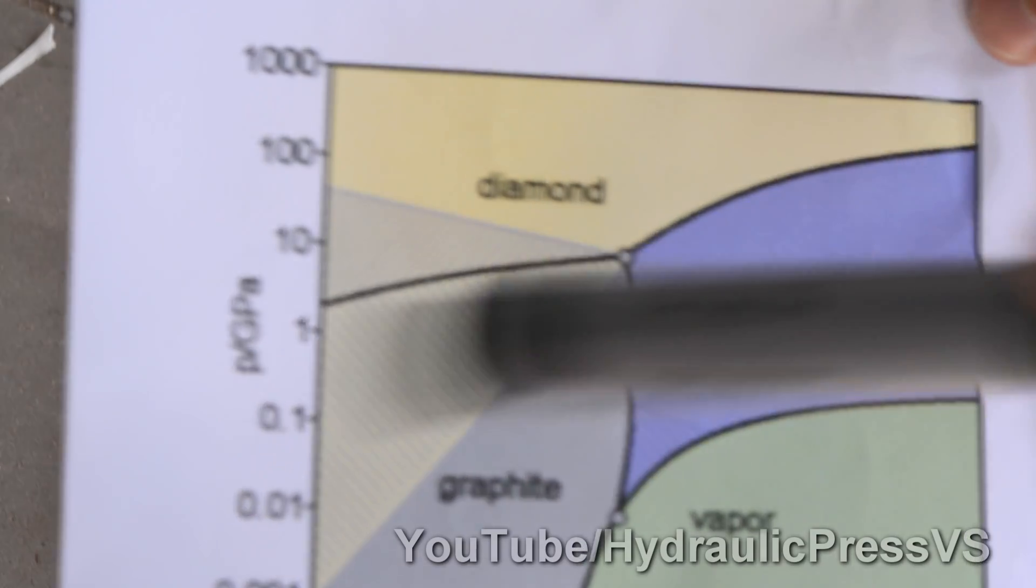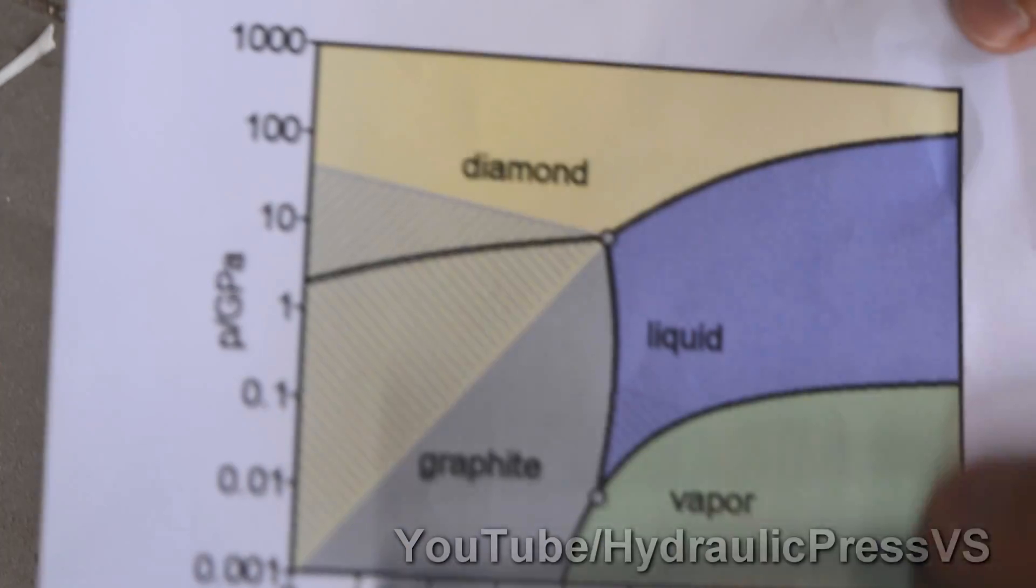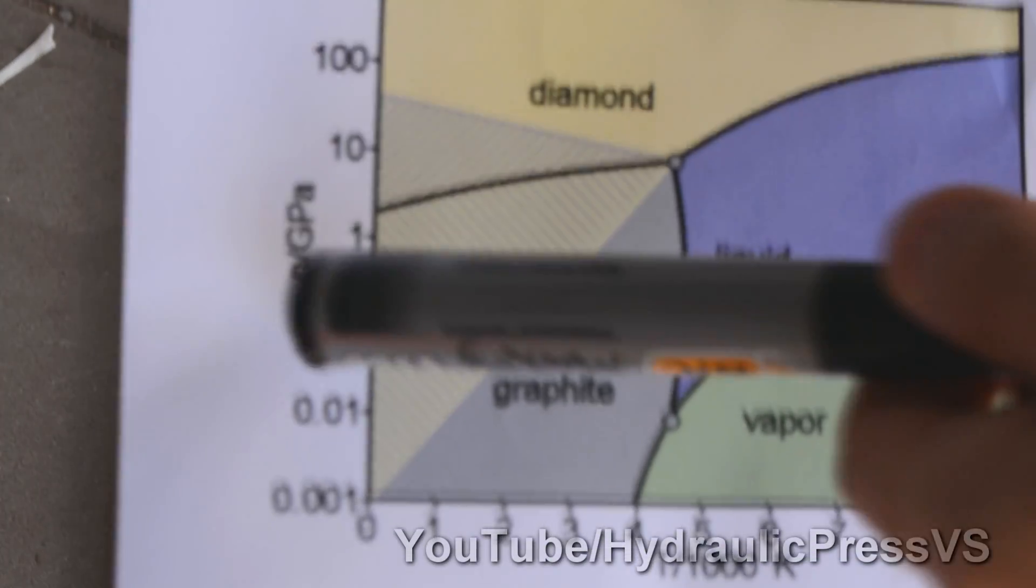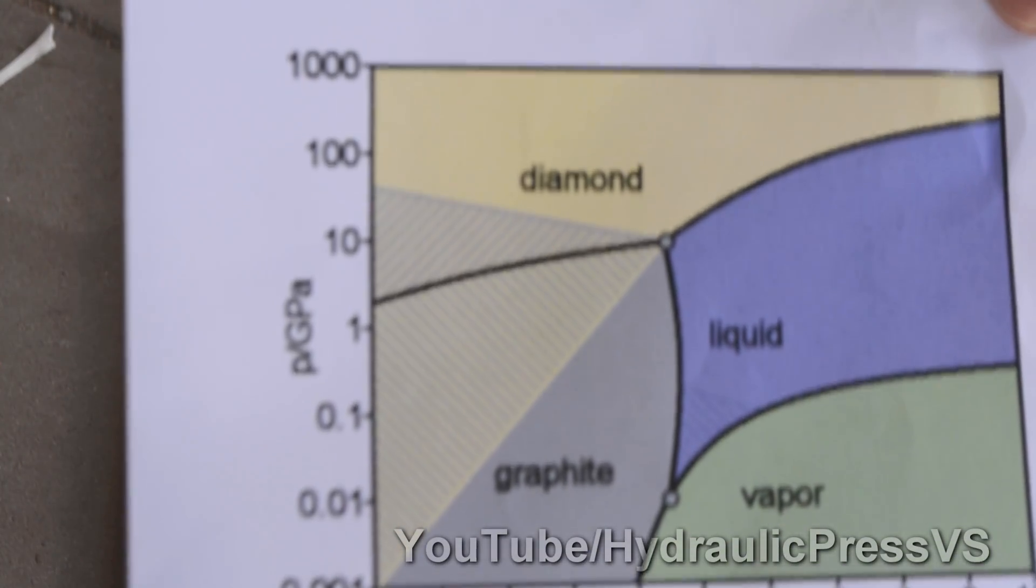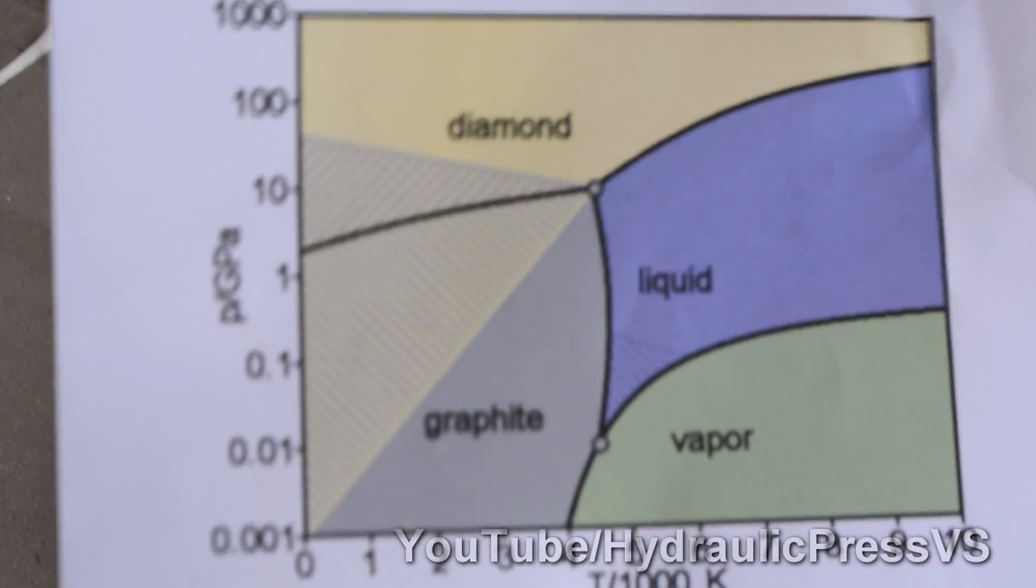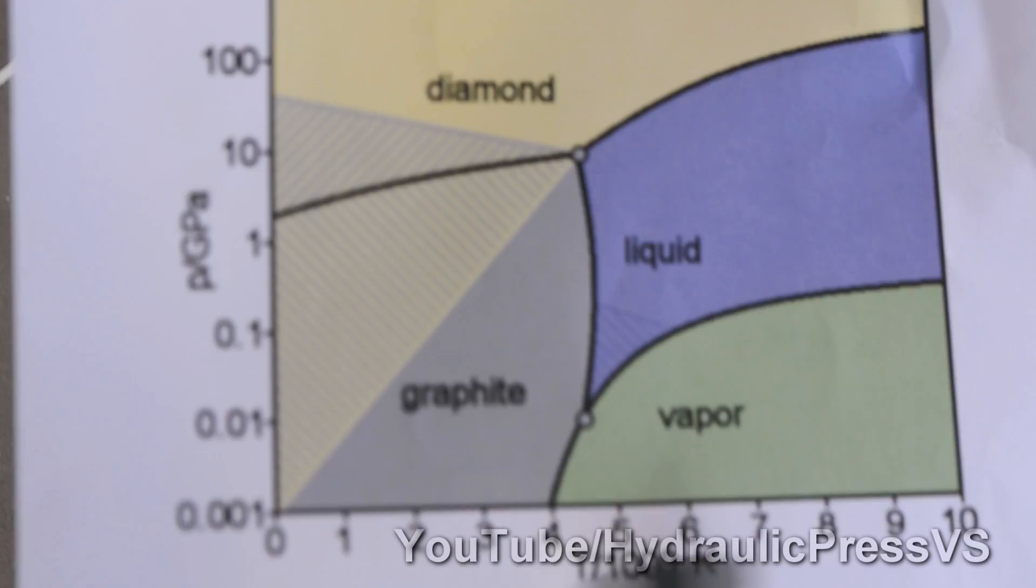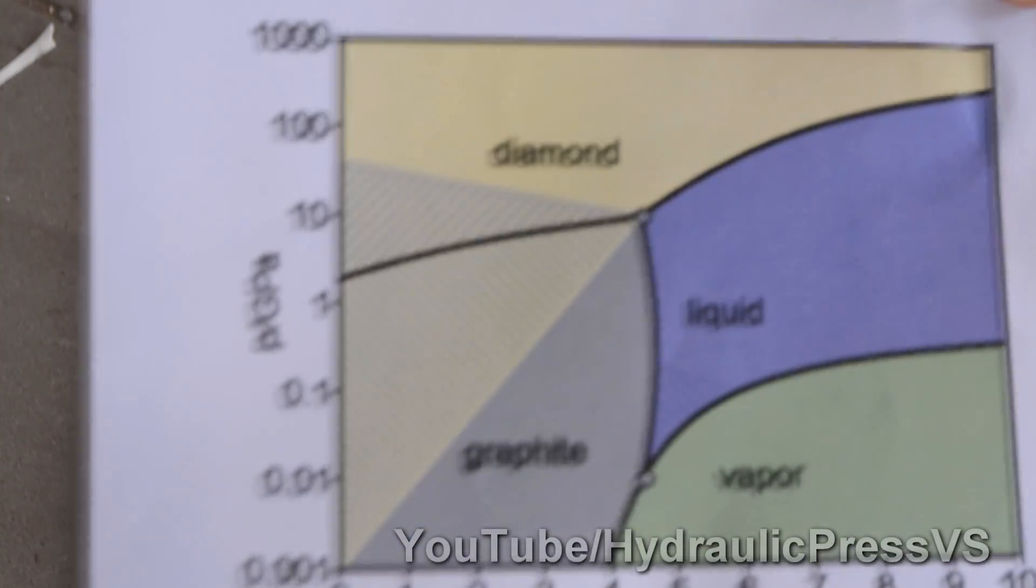Yeah, you see this area here. This is where the shit happens. This is where we want to go to get the diamond. So this right here is pressure and then we have the temperature. So obviously when you have a higher temperature you're gonna have easier time making a diamond.